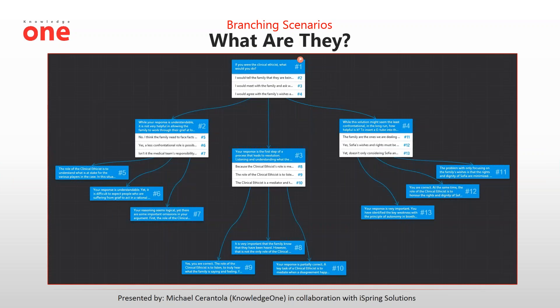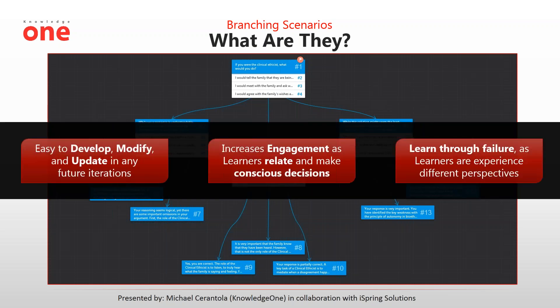This is an example of a branching scenario created in iSpring. What helps us in production is that these are easy to develop, modify, and update in future iterations of the course. It increases engagement as learners get to relate and make their own decisions. And you get to learn through failure as you re-experience branching and potentially open your mind to new perspectives you might not have seen before.